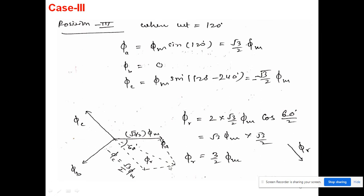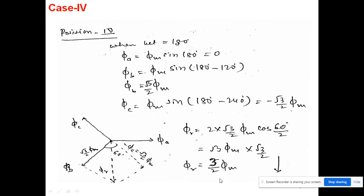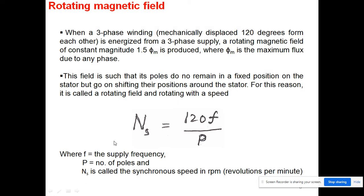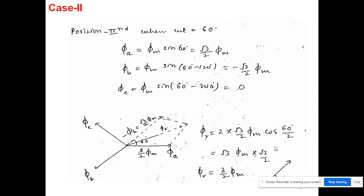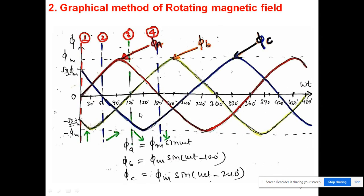In Case 4, ωt = 180°. phi_a = 0, phi_b is positive, and phi_c is negative. Drawing phi_b in the positive direction and phi_c in the negative direction, and applying the parallelogram law, the resultant is again 3/2 * phi_max, with the direction now pointing downward, continuing the clockwise rotation observed in the previous cases.